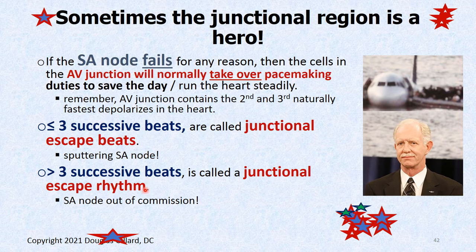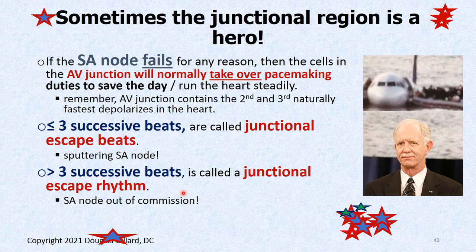A junctional escape rhythm is the hero — the junctional region is not being mischievous, it's taking over because the SA node is struggling and not working. It runs a steady rhythmic heartbeat, maybe a tiny bit slower than normal. Is it a sinus rhythm? No — to be a sinus rhythm, the sinoatrial node has to be running it, and it's not. If it's a junctional escape rhythm, it is not a sinus rhythm.